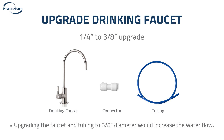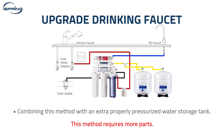Method number four: upgrade the drinking water faucet. A typical drinking faucet fits quarter-inch tubing. Upgrading the faucet to 3/8-inch diameter would also increase the water flow. Meanwhile, combining this method with an extra properly pressurized water storage tank added to the system would be the ultimate way to increase water flow on a standard RO system.